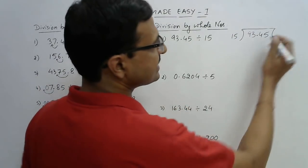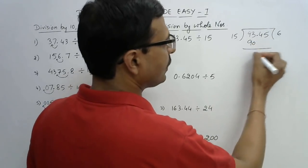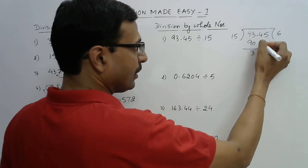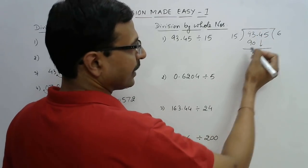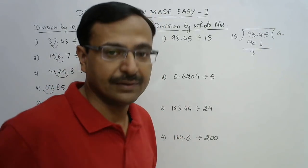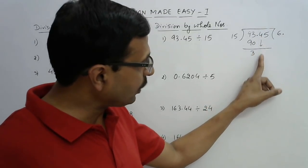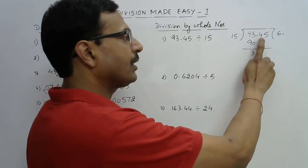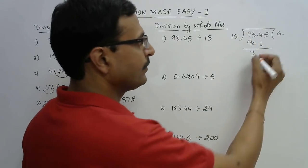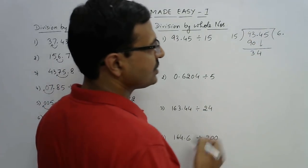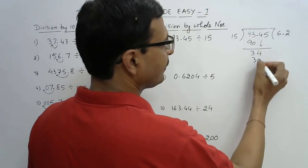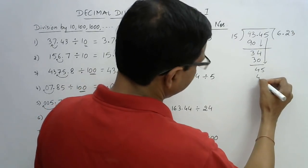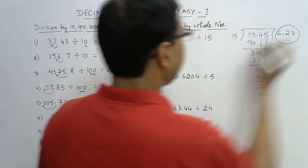15 goes 6 times into 93 — 15 × 6 = 90 — and when you subtract you have 3 remaining. Now, whenever you bring down the digit which is after the decimal, the answer will have that decimal at that place. So I bring 4 down — 4 comes after the decimal, so the decimal comes into the quotient here. Then 34: 15 × 2 = 30, bring down 5 to get 45, and 15 × 3 = 45, giving the answer 6.23.